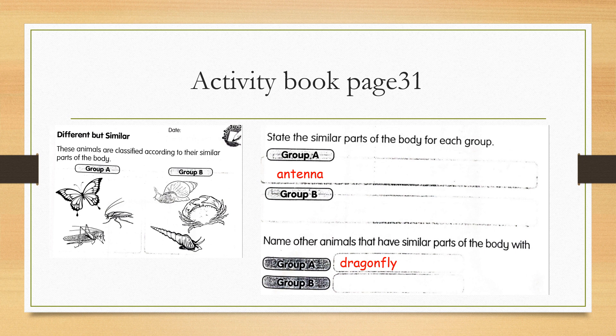Next one, name other animals that have similar parts of the body with Group A. Group A have antenna. So the answer here, you can give the answer dragonfly. Dragonfly also has antenna. Do for Group B here.